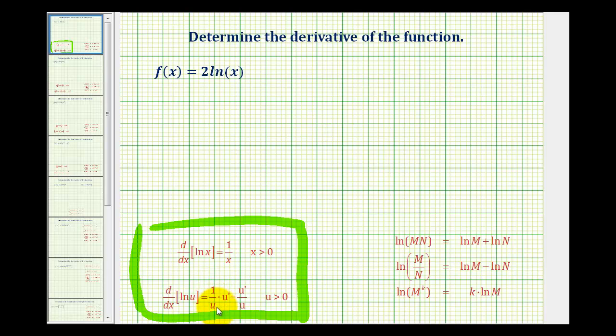Now if you're ever in doubt whether you need to apply the chain rule, it would never be incorrect to use it. Notice if we tried to use the chain rule for natural log x, u would be equal to x, and u prime would just be equal to 1.